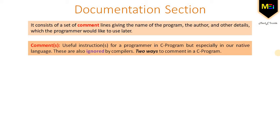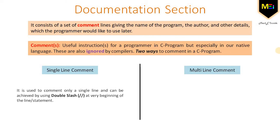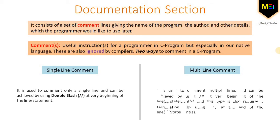We have two ways to comment in a C program. First is single-line comment and second is the multi-line comment. Single-line comment is used to comment only a single line and can be achieved by using double slash at the very beginning of the line or statement. Multi-line comment is used to comment multiple lines and can be achieved by using slash-asterisk at the very beginning, and also requires termination by using asterisk-slash at the end of the line or statement.